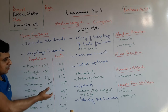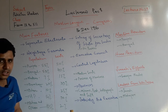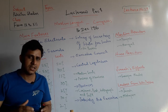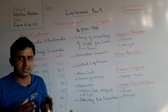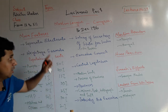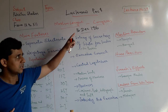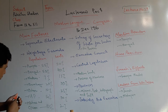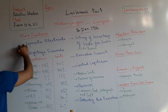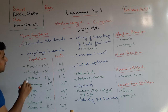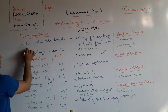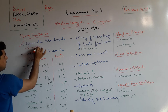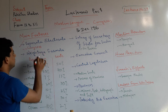These are the major features and characteristics of this agreement, which was signed between Congress and Muslim League on 16 December 1916. The first feature is separate electorate for Muslims. This was accepted by Congress for the first time in the history of the freedom movement.